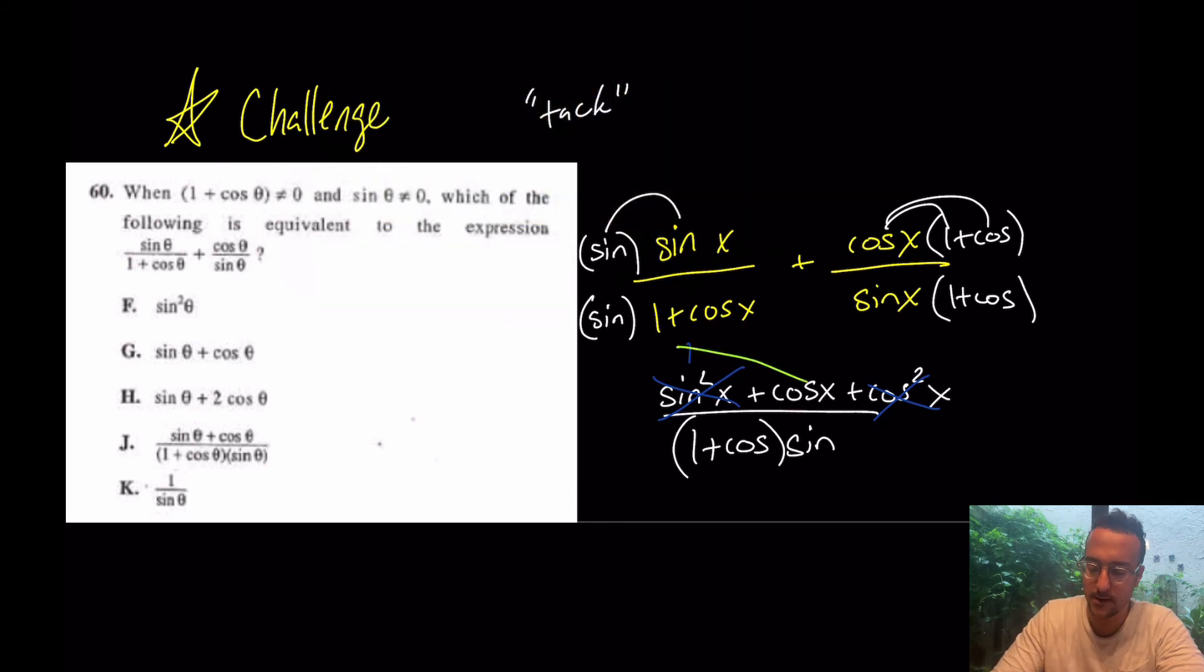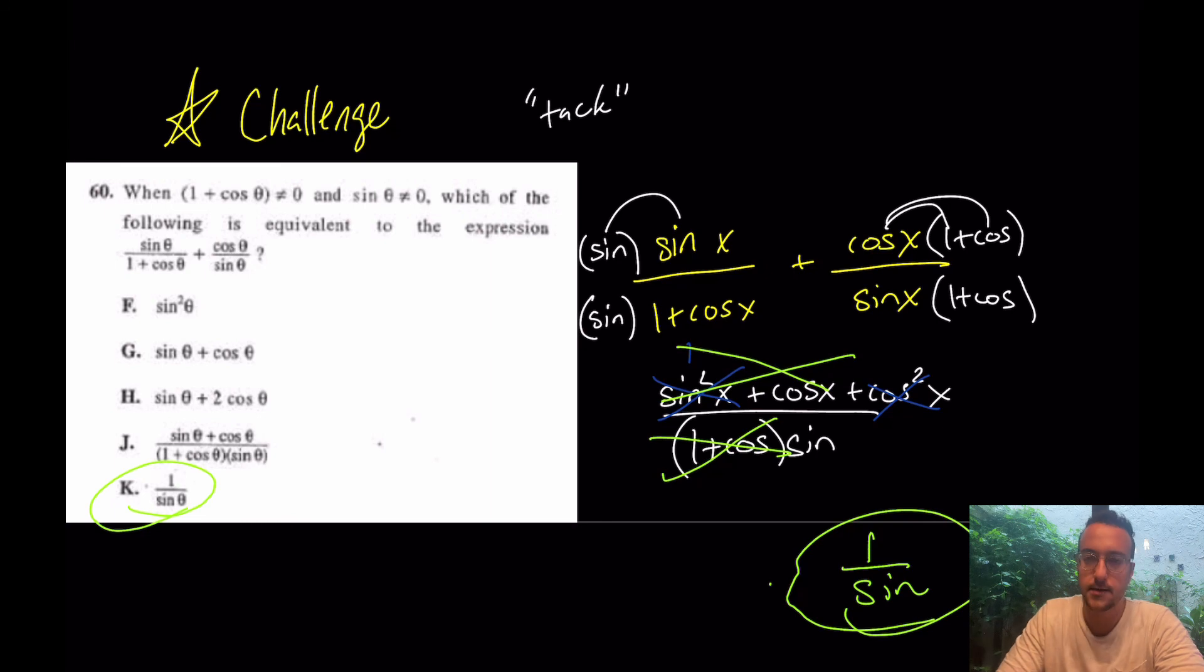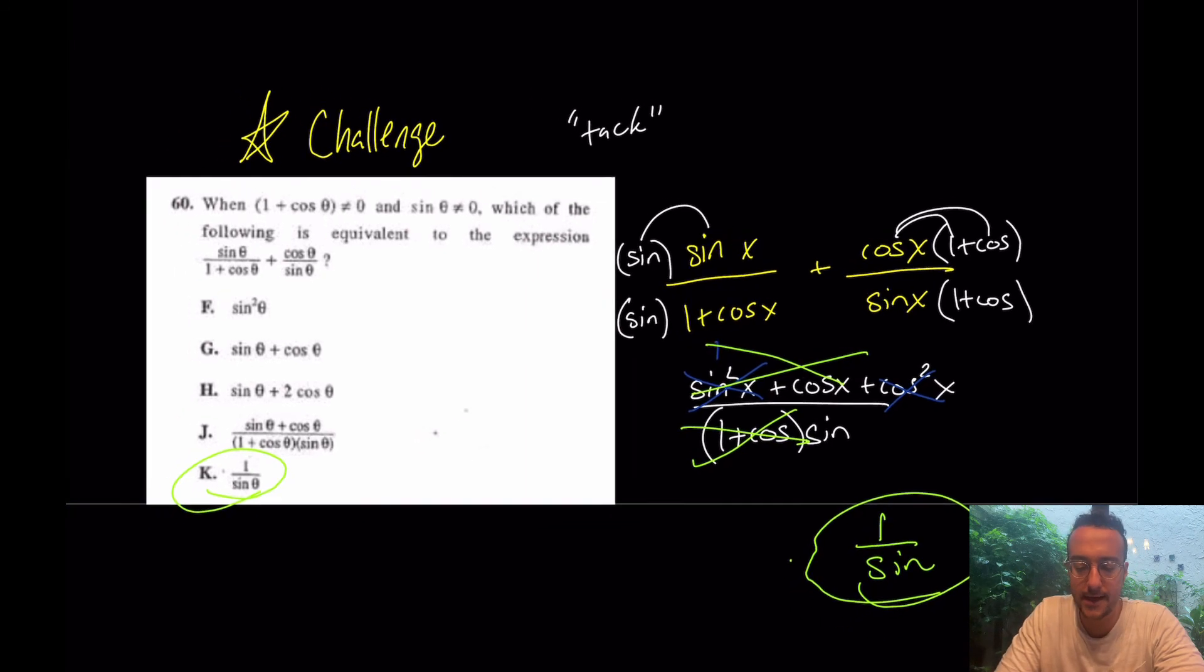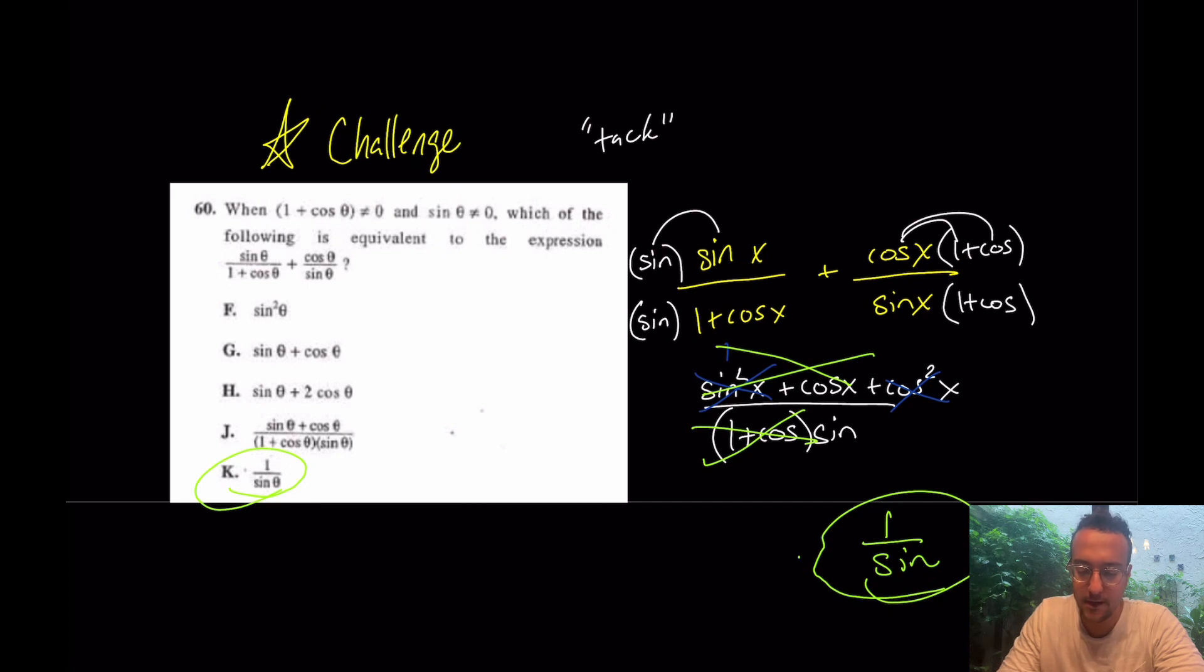In that case, you know what's beautiful about this question? This 1 plus cosine x completely cancel out with this 1 plus cosine x, and I'm left with 1 over sine. Let me clean that up a little bit. It's going to be 1 over sine. And which answer choice do we like there? We really like k. All right, boys and girls, so that is it for these three questions.